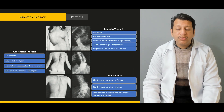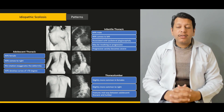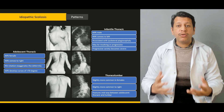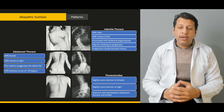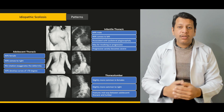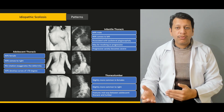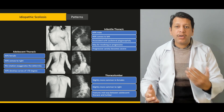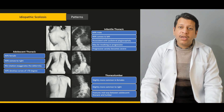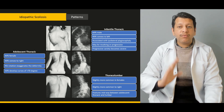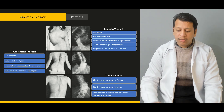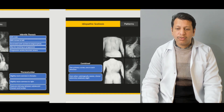From then onwards, we will be discussing the different patterns of scoliosis. It could be in the form of congenital scoliosis, it could be juvenile scoliosis or adolescent idiopathic scoliosis, or it could involve different curve locations — whether it's lumbar or thoracolumbar scoliosis.